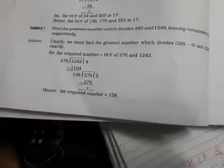They are giving leaving remainder 9 and 7. What you have to do is 285 minus 9 and 1249 minus 7. You get two numbers: 276 and 1242. Whatever numbers you are getting after subtracting the remainder, you have to find HCF of that.